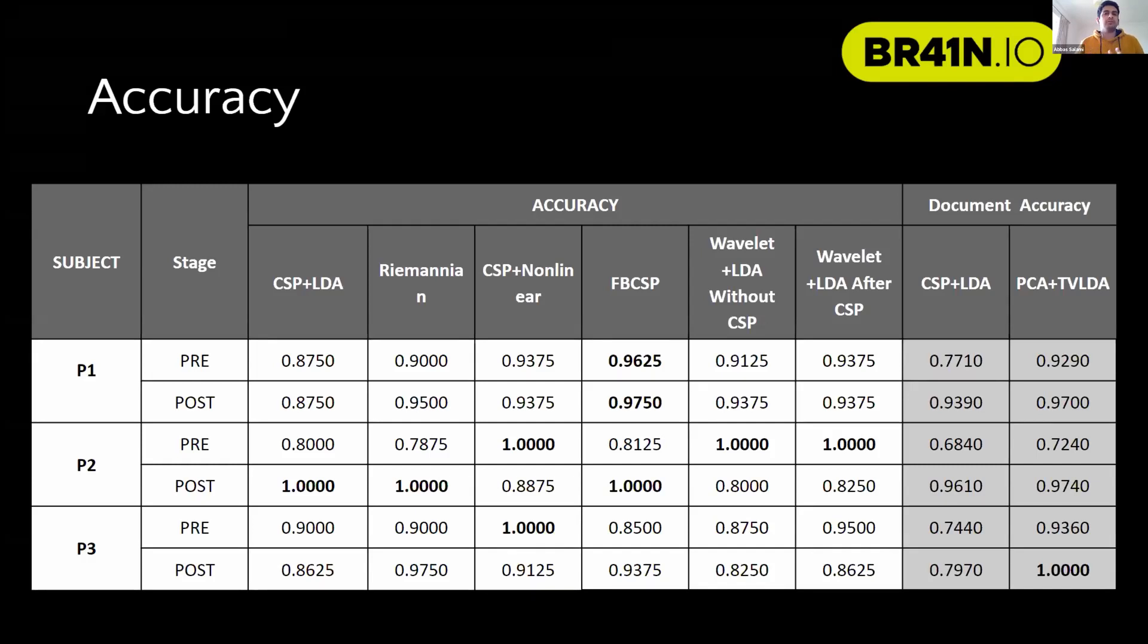After that, we tried different methods. The Riemannian method is one of the promising methods because it's very fast and it received a very high result. Also, the using of the nonlinear features is promising.